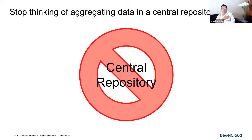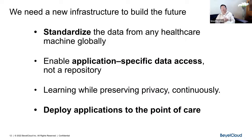Problem one is technical: as soon as you gather data you implicitly think about an application of that data; as soon as you do that you organize a schema; as soon as you organize a schema you lock out the second application. Problem two is privacy: two fundamental principles are purpose limitation and storage minimization. If you gather a bunch of data without a clear purpose, that violates both principles. So we need a new infrastructure — you're not going to build the future of healthcare on top of EMR systems.